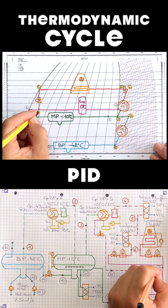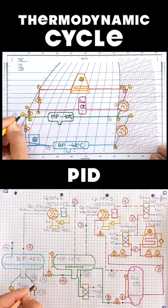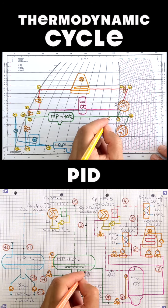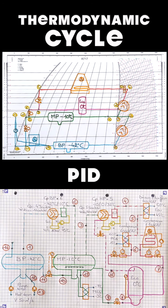The evaporators are flooded by a pump or by gravity to reduce the temperature difference on the exchanger.